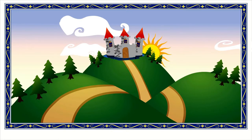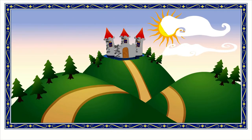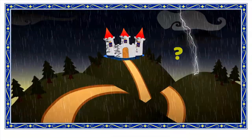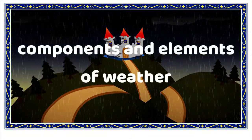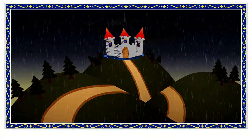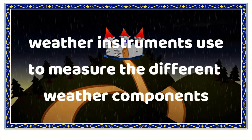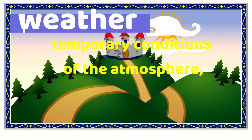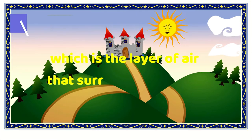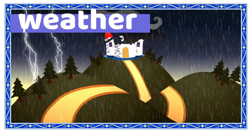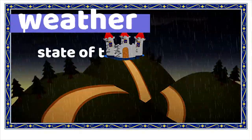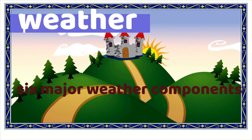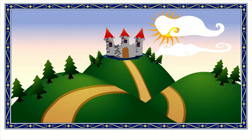Now class, how do you describe the weather conditions today? Do you know what weather is? What about the components and elements of weather? The term weather refers to a temporary condition of the atmosphere, which is the layer of air that surrounds the Earth. We describe it as the state of the atmosphere in our own part of the world.